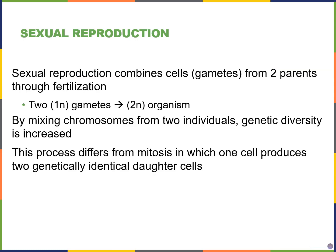In sexual reproduction, two cells called gametes will come together, and these gametes come from two different parents. The process of the gametes coming together is known as fertilization — often we say the sperm fertilizes the egg. Gametes are haploid; these cells only have one version of every gene. When they come together, they regenerate the diploid organism, which has two versions of every gene located on homologous chromosomes. By taking chromosomes from two different individuals, we increase genetic diversity in the offspring.